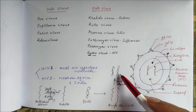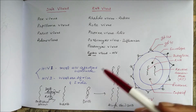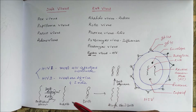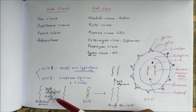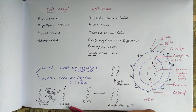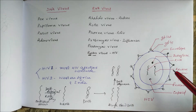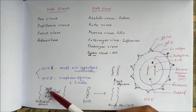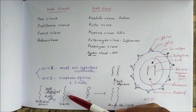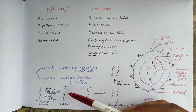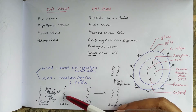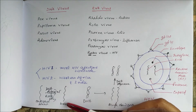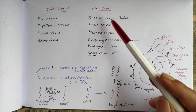One strand is the sense strand and the other is the antisense strand. The antisense strand of DNA, by the action of DNA-dependent RNA polymerase, produces messenger RNA — a process called transcription. Transcription is required because messenger RNA carries the message to produce specific proteins. Transfer RNA then provides the amino acids required for protein synthesis as per the information provided by the messenger RNA.